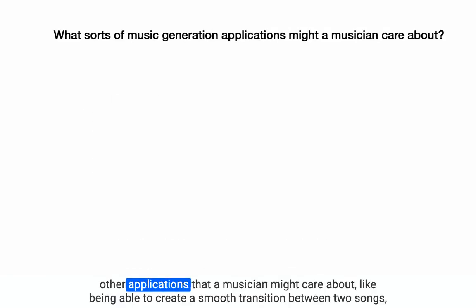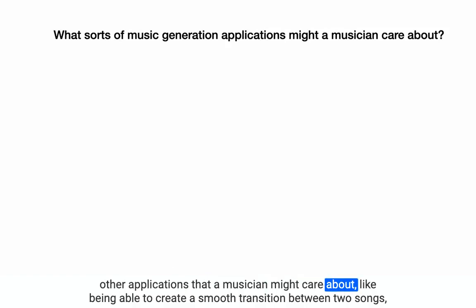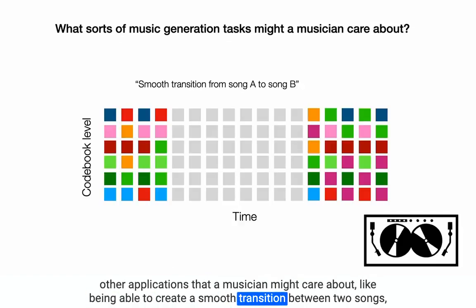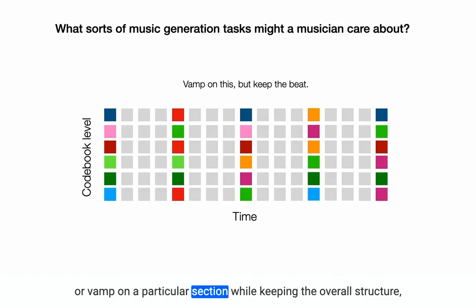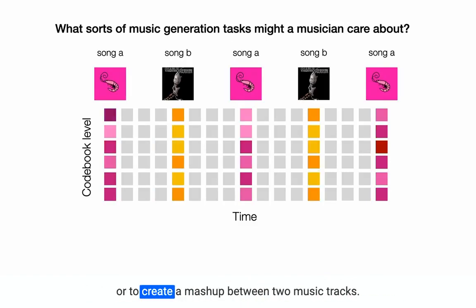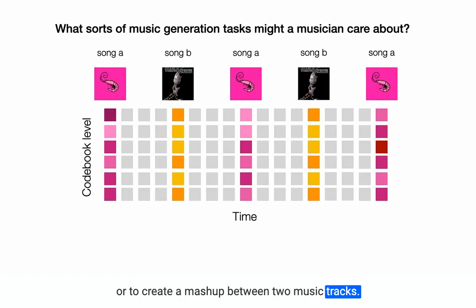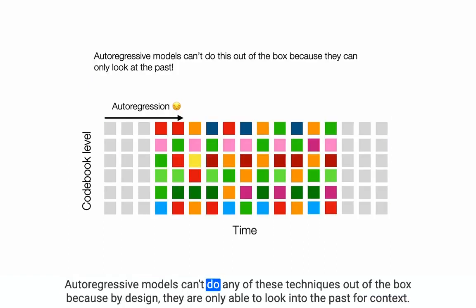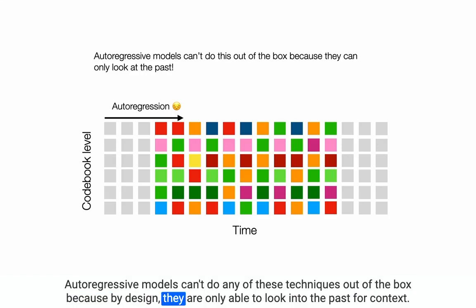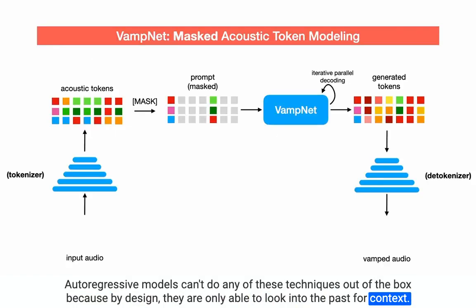There are several other applications that a musician might care about, like being able to create a smooth transition between two songs, or vamp on a particular section while keeping the overall structure, or to create a mashup between two music tracks. Autoregressive models can't do any of these techniques out-of-the-box because by design, they are only able to look into the past for context.